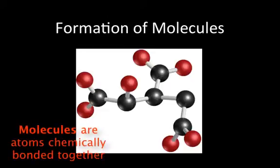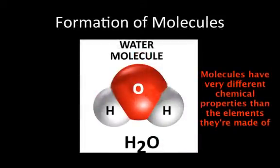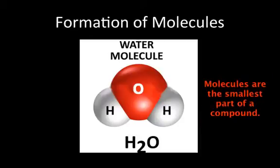Molecules are formed when atoms chemically bond together. When atoms of elements bond together, the chemical properties of the elements change. For example, a molecule of water has chemical properties very different from the two elements that it's made of. Molecules are the smallest particle of a compound.